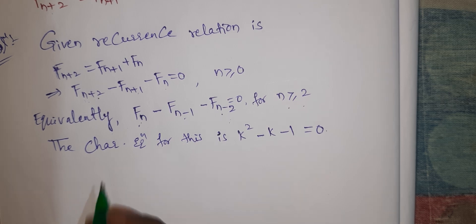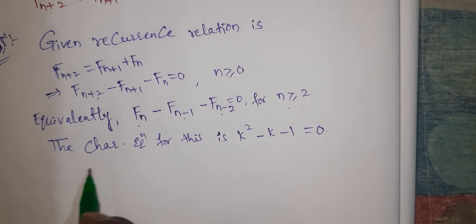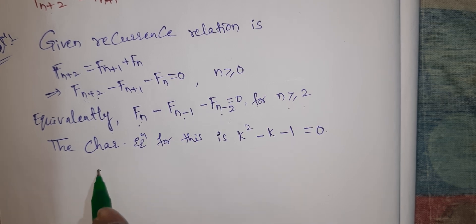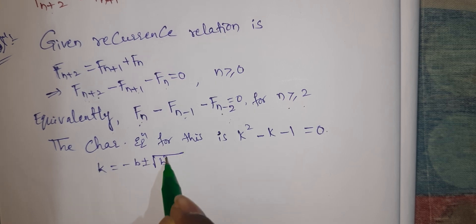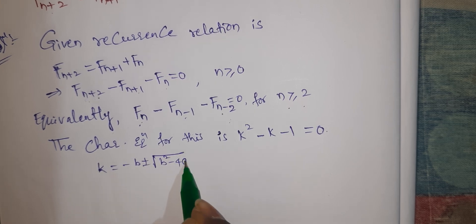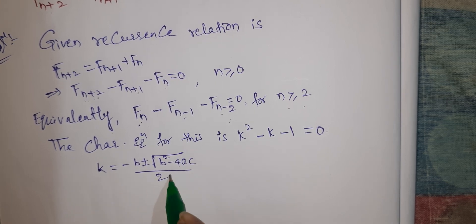Using the quadratic formula, k equals minus b plus or minus the square root of b² - 4ac, divided by 2a.